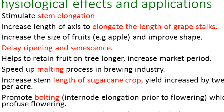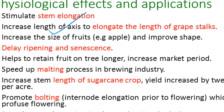Gibberellins increase the length of the axis, for example elongating the length of grape stalks. In grapes, one stalk has a large cluster of grapes, and if the stalk is very short, grapes get completely clustered, causing congestion, bursting, and fruit damage. So orchard farmers apply gibberellins to the stalks, which increases stalk length, spaces the fruits apart, prevents damage, and increases the shelf life of the fruit on the tree.